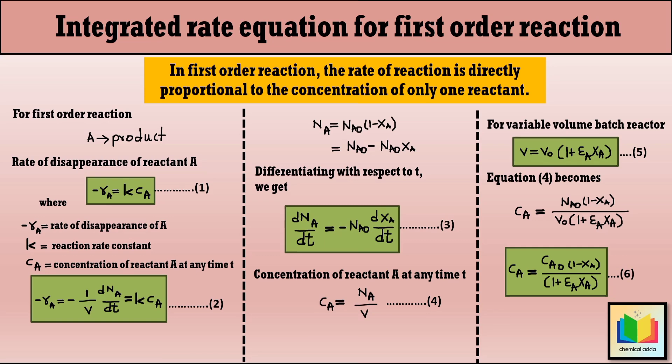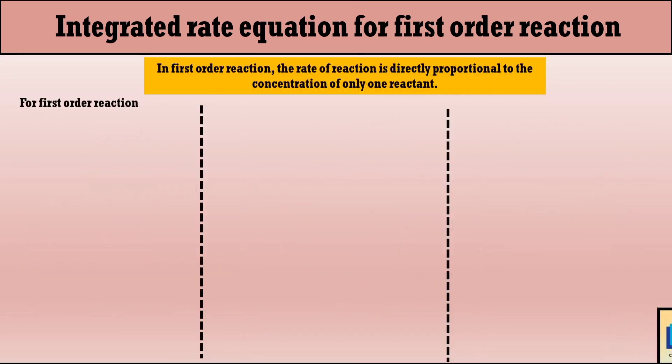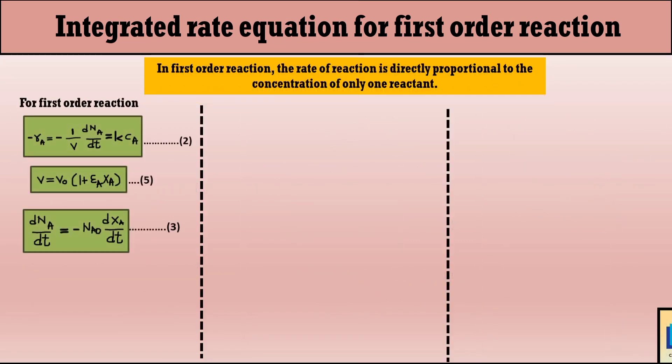Now we have three equations — dN_A/dT, V, and C_A — all in terms of X_A. In step 2, we substitute the values of V from equation 5, dN_A/dT from equation 3, and C_A from equation 6 into the rate equation, equation 2.